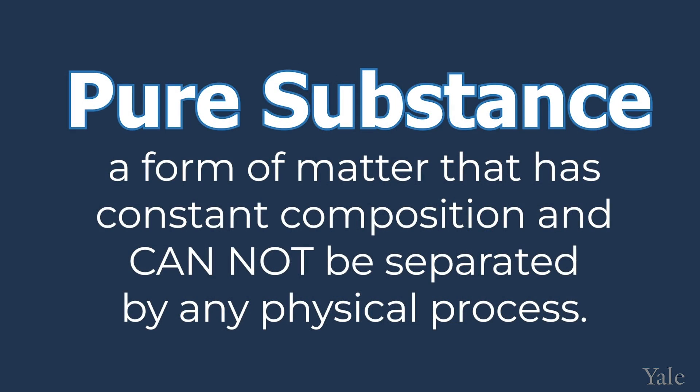In this video, we are going to talk about the four different classes of matter. If you have a glass full of water with no other chemicals in the water, then the water is a pure substance. A pure substance is a form of matter that has constant composition and cannot be separated by any physical process. A physical process is a process that changes the state of matter, but not the identity of a chemical.